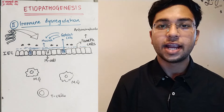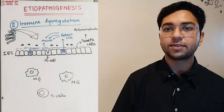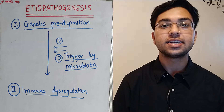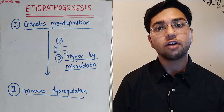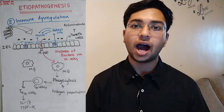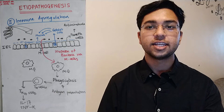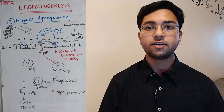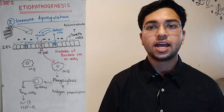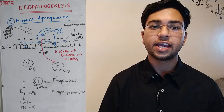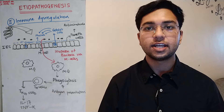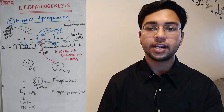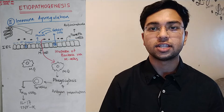Moving on to immune dysregulation. What you are seeing right now is the diagrammatic representation of the normal cross-section of the intestine. But if the person is genetically susceptible and there is a trigger by microbial organism along with immune dysregulation present, then it will lead to IBD. There is invasion of bacteria via the M cells or between the epithelial cell gap. Then macrophages engulf it and present it to the helper T cells. Helper T cells change into the TH17 subtype and stimulate more macrophages and TH17 cells, releasing interleukin-17 and tumor necrosis factor alpha. This TNF-alpha plays a major role in IBD pathogenesis.